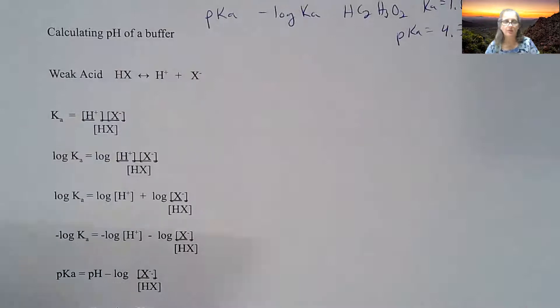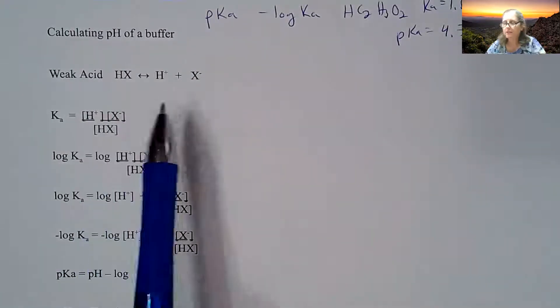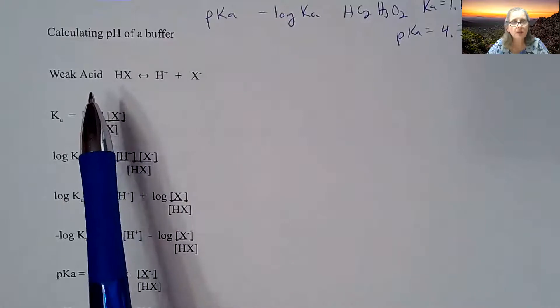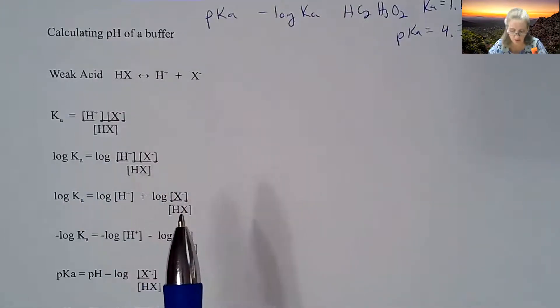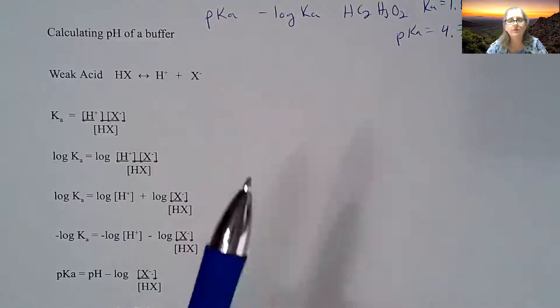It's underneath the equilibrium section, so you can take that out as well. These are all in your notes already. I just want to show you where this equation comes from. It's called the Henderson-Hasselbalch equation.